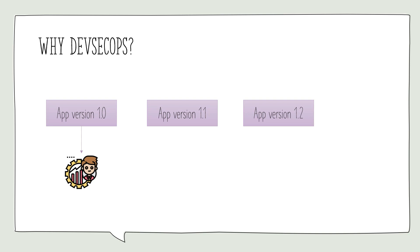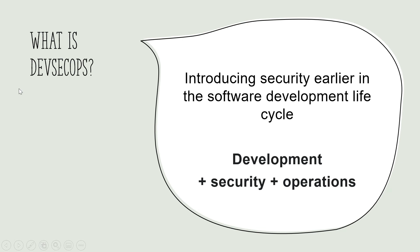That gave rise to the need to have security embedded in the DevOps pipeline. So essentially, the birth of DevSecOps happened — which is nothing but introducing security earlier in the software development life cycle. Development plus security plus operations. DevOps was development plus operations; DevSecOps is an upgraded version with development, security, and operations — having security inbuilt into the DevOps pipeline from the beginning rather than waiting till the end, to remediate bottlenecks that arise when security is checked only after deployment.